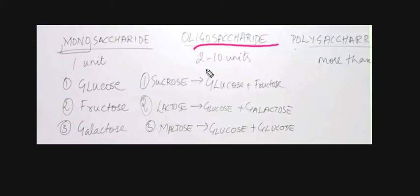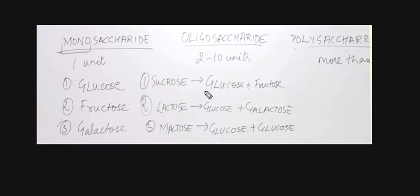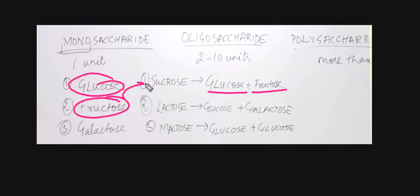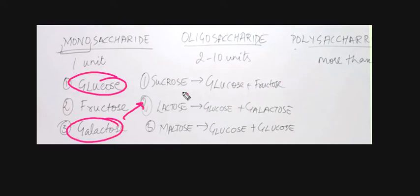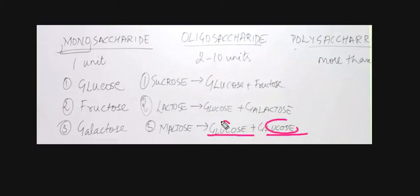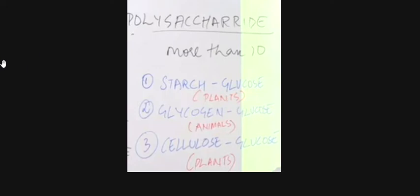Oligosaccharides include sucrose, lactose, and maltose. Sucrose is made of glucose and fructose. Lactose is made of glucose and galactose. And maltose is made of glucose and glucose.